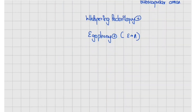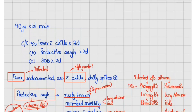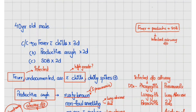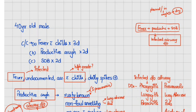Now we will discuss how to decode the history and examination. The patient has fever with productive cough and shortness of breath. At first look, this appears to be an infected airway disorder — in cases of pleural or interstitial disorders, the cough might be present but will be dry. So initially it looks like an infected airway disorder.